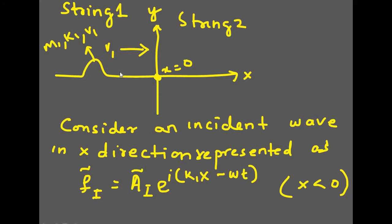Consider the incident wave. The incident wave will have mu1, k1, and v1 as its properties. The wave is propagating in the positive x direction. The wave equation will be f_i equal to A_i times e raised to i(k1*x minus omega*t).